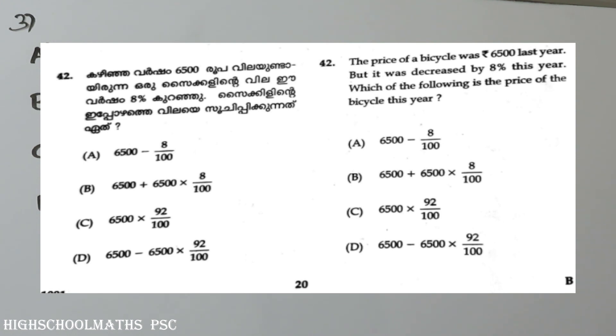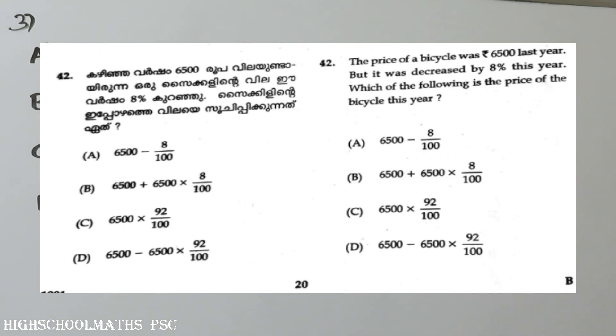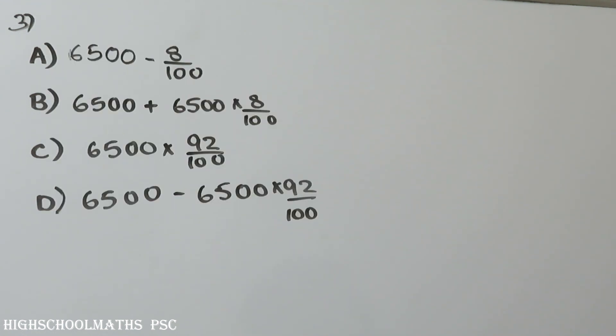Let's start with the next question. In the last year, the price of a bicycle was Rs. 6500, but it decreased by 8% this year. Which of the following represents the price of the bicycle this year? The options are: Rs.6500 minus 8 by 100; Rs.6500 plus 8 by 100; Rs.6500 plus 9 by 100; Rs.6500 minus 9 by 100.